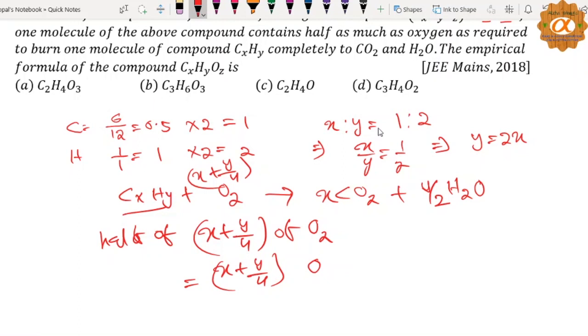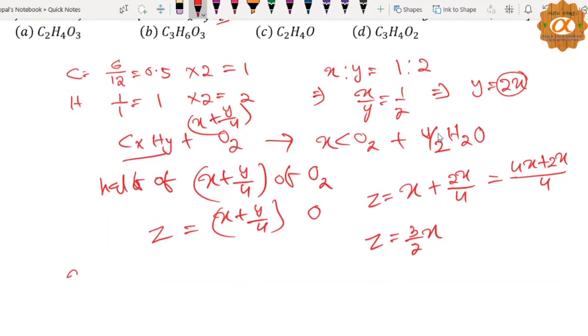यहां पर given है Z coefficient, that means Z is equal to X plus Y by 4. Y के जगह हम 2X लिख दें तो X plus 2X by 4, LCM हो जाएगा 4X plus 2X by 4. That means Z is equal to 6X by 4, that means 3 by 2X.